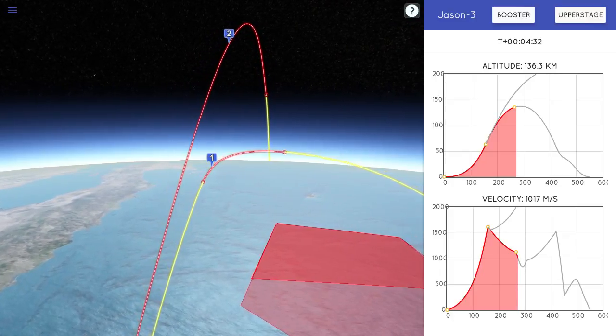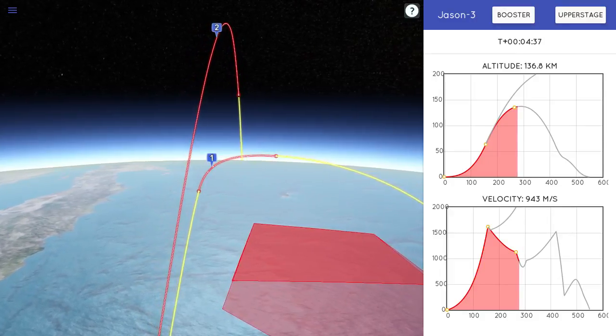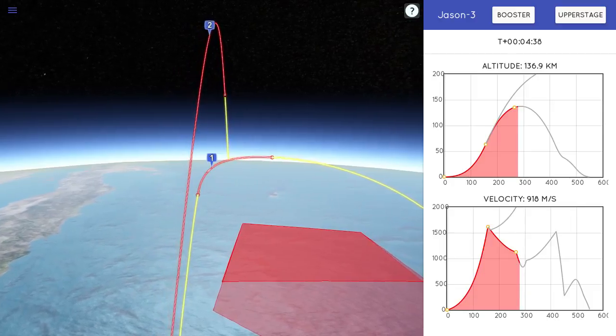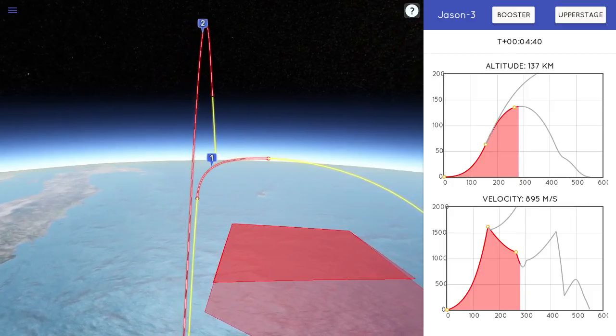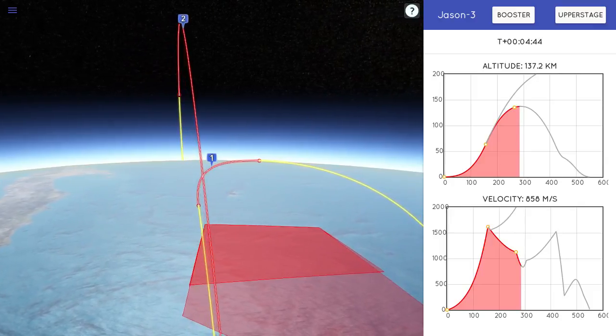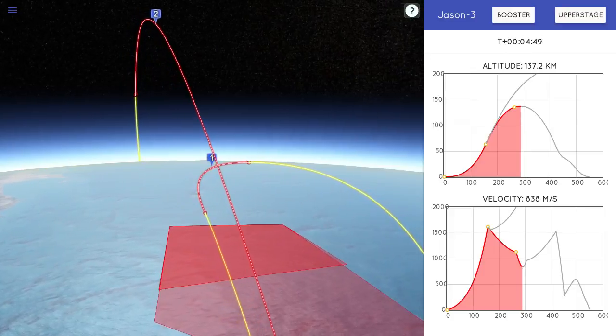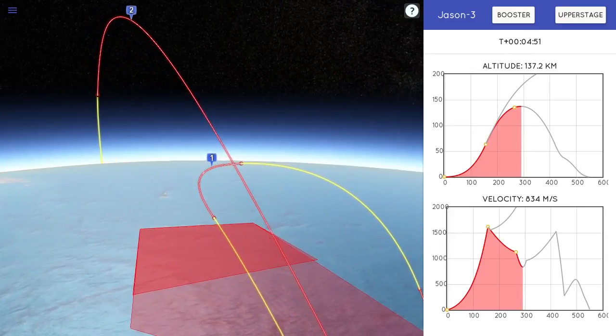So we're really excited. We had some great events today. Again, the view that you're seeing on your screen right now, that is the second stage as it is taking Jason-3 to polar orbit. So in just a few minutes here, as soon as we get confirmation that the first stage is coming back towards the drone ship, we'll be looking at the second stage one final time and then taking a 45-minute break before the second burn and satellite deployment.